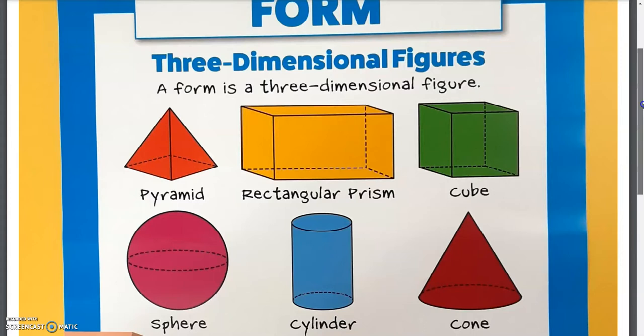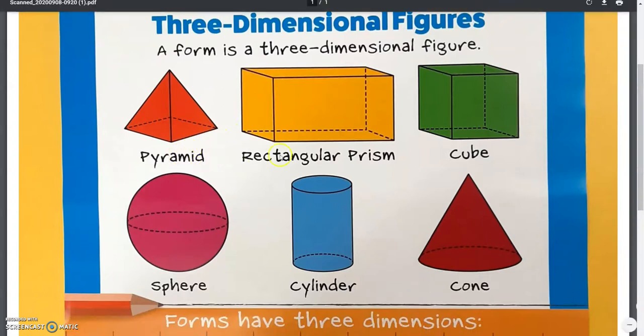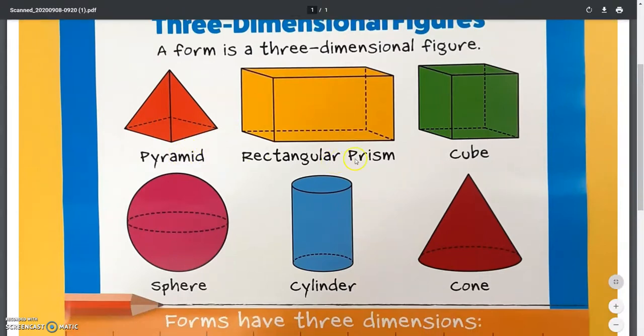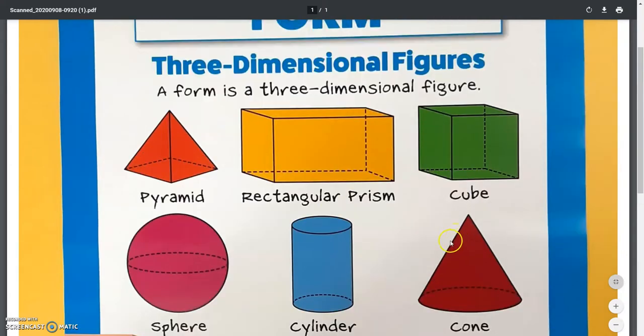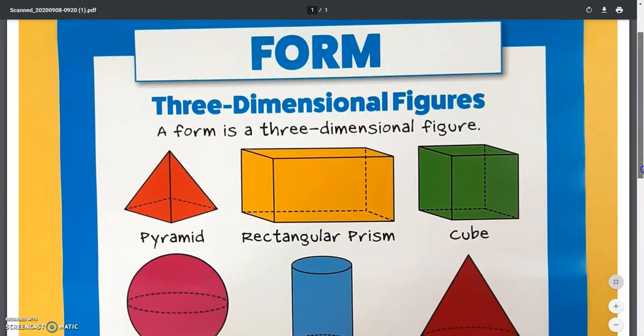So, a form is a three-dimensional figure. We have pyramid, rectangular prism, cube, cone, cylinder, and sphere.